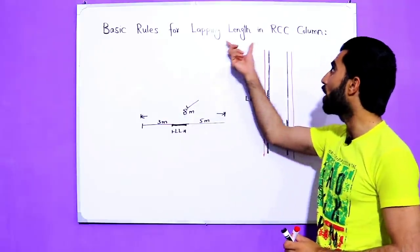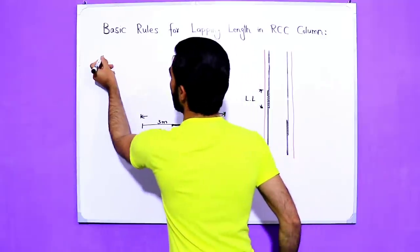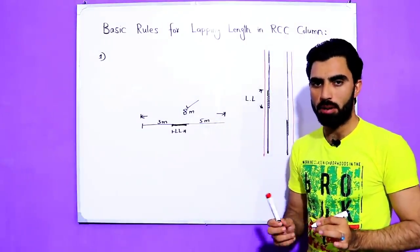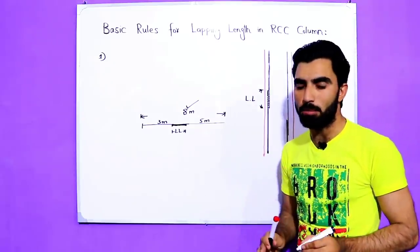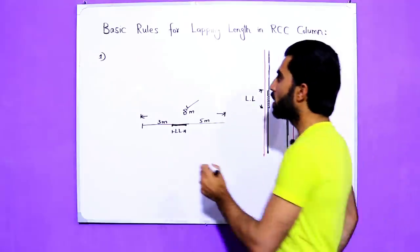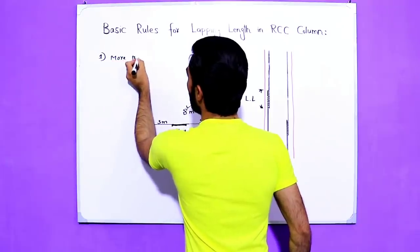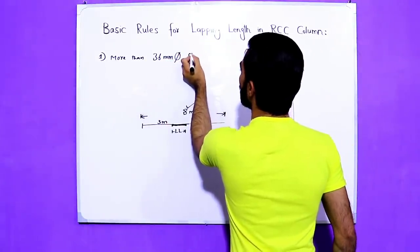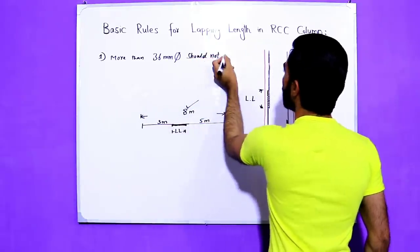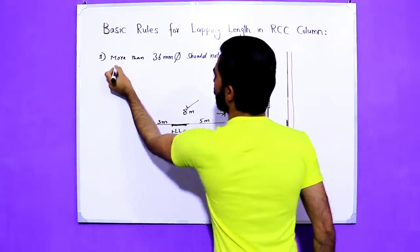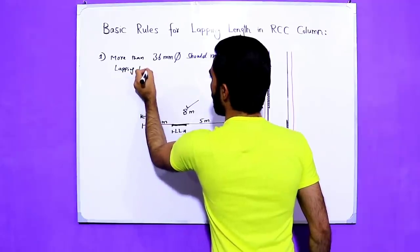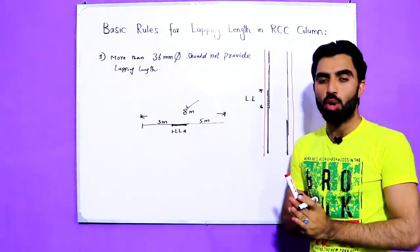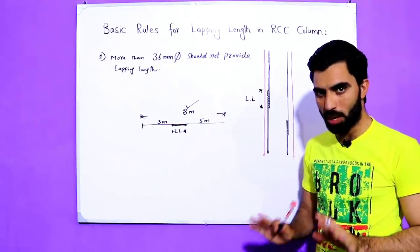Now, what are the basic rules for lapping length in RCC columns? The first rule is: if the diameter of the steel bar is more than 36 millimeters, we should not provide lapping length. If the steel bar diameter is more than 36 millimeters, lapping should not be provided because it can cause problems. This is the first rule.